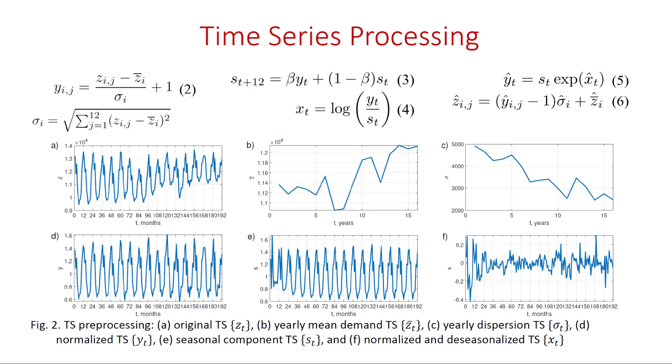Equation 2 expresses normalization. Z over bar is the mean value of the yearly period and sigma is its dispersion. After normalization yearly sequences are unified. They all have an average of 1 and the same variance. They carry information about the shapes of the yearly periods.